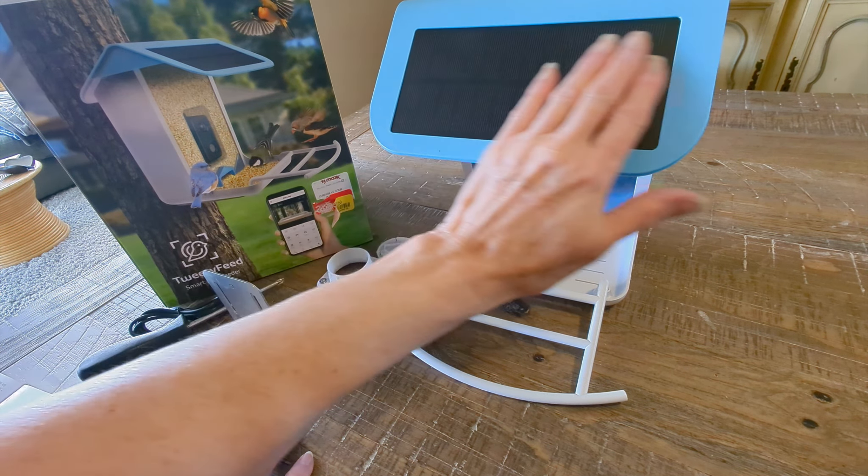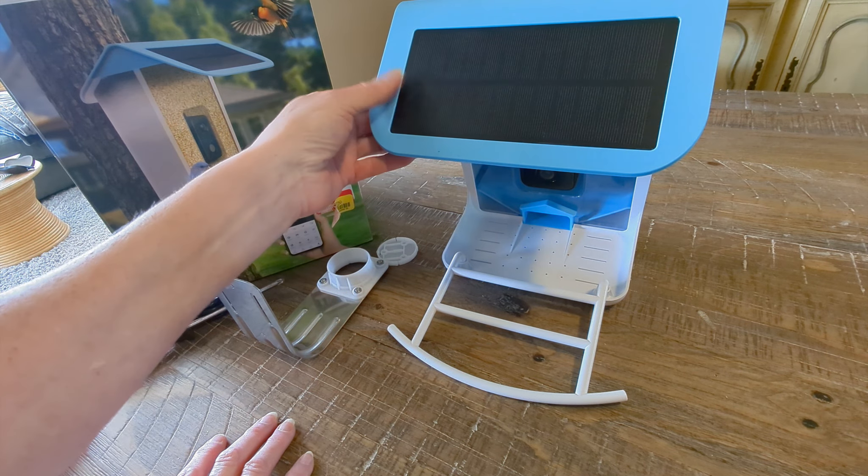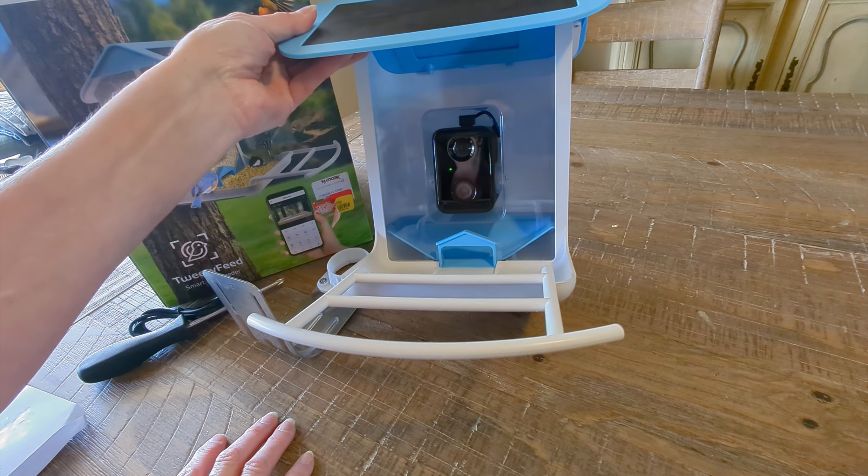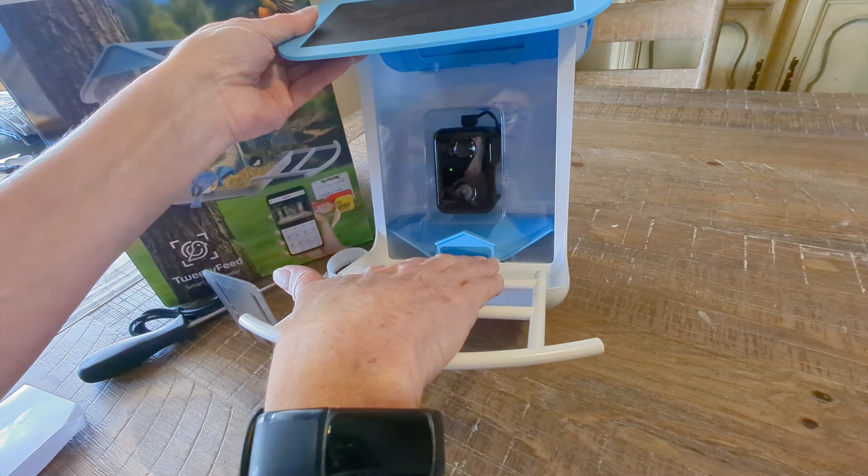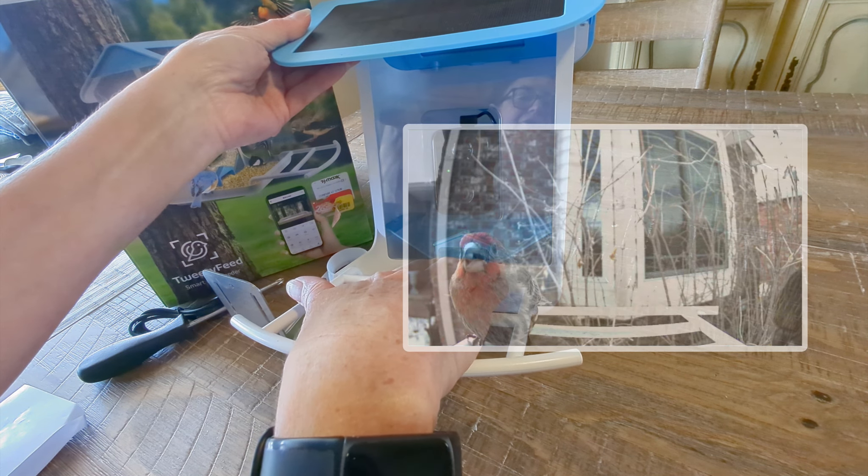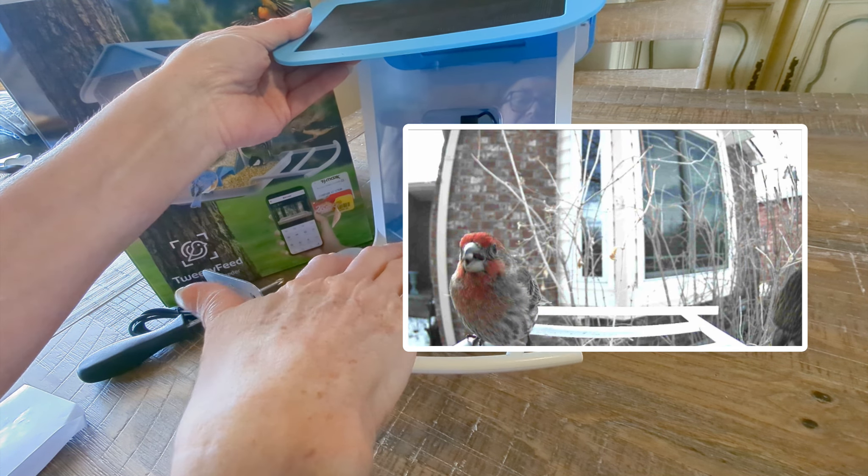So if you see here, it's solar panel and has the camera right there. So when they land here, you get a really good shot of them. And you can do it vertical or horizontal.